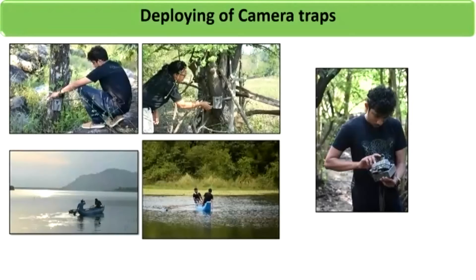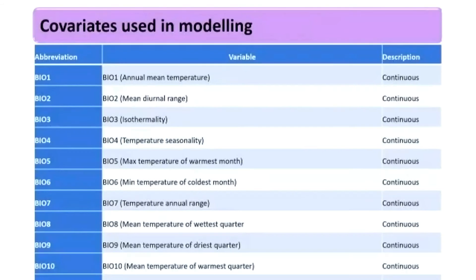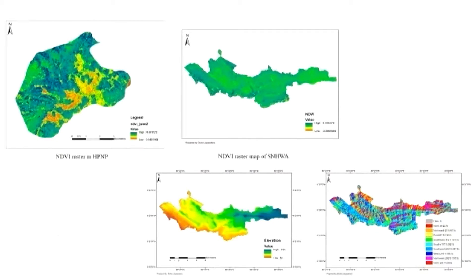Sometimes we had to take different routes — especially in Maduru, we had to go by water to approach some locations. We used presence-only MaxEnt tests for the analysis, especially for modeling. These are the covariates used; not all of them, but we selected those that were not correlated with each other. We used global databases as well as what we developed using GIS procedures, and these are some raster maps used for the modeling.